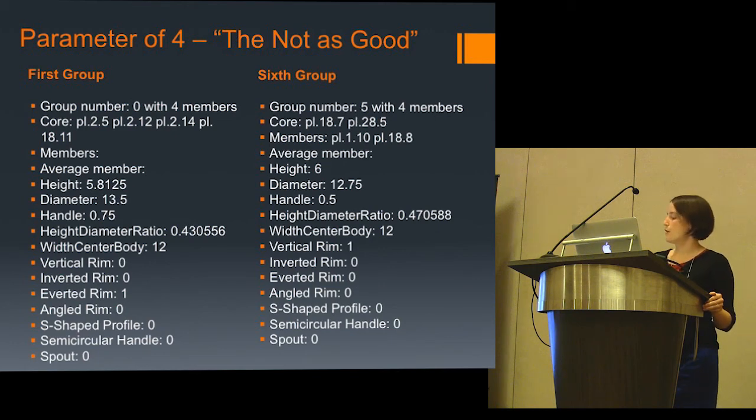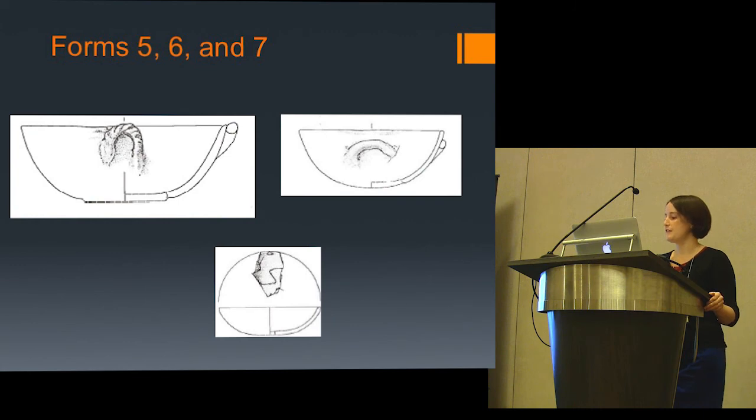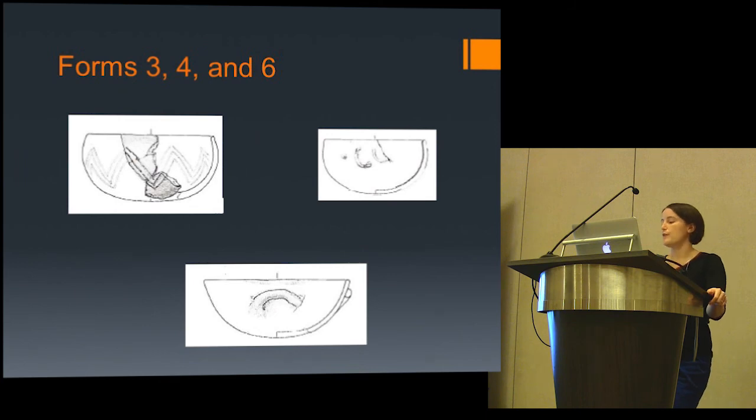So just to go through a couple of these here, this first group was composed of vessels from these three forms, with the average description showing an everted rim, a height to diameter ratio of .41, a height of almost 6 centimeters, a diameter of 13.5, and roughly 75% of them had a handle. This is consistent with the fact that for Sayre, three of these forms could be considered cups or bowls, and for the most part they all had everted rims. Now for the sixth group, which combines vessel forms 3, 4, and 6, they all had an average height of 6, a diameter of 12.75, 50% had handles, and almost all of them actually had a vertical rim. All of these have a diameter that is consistent with each other, which may explain their overlap here and which is discussed more by Sayre.